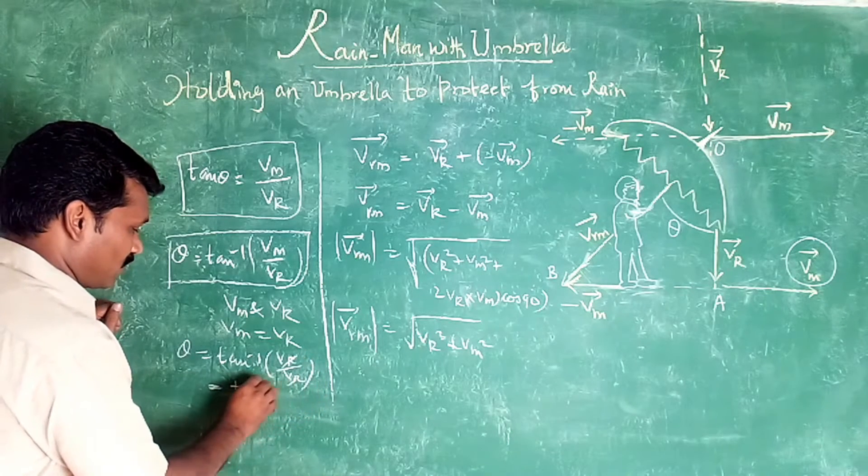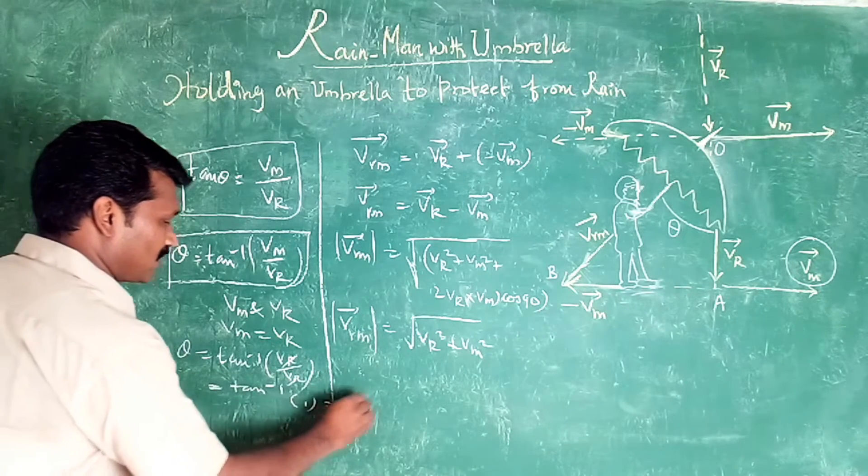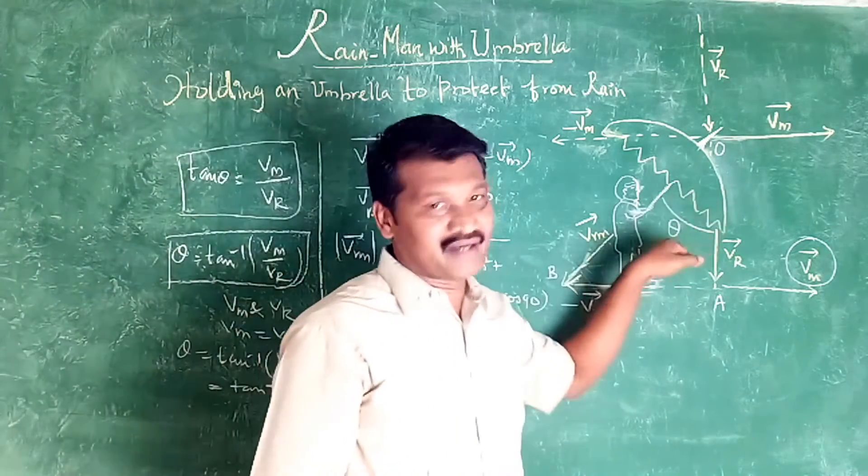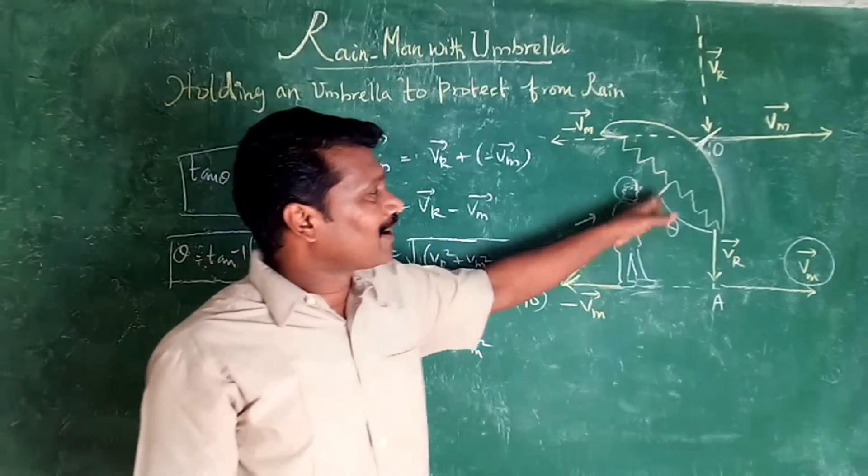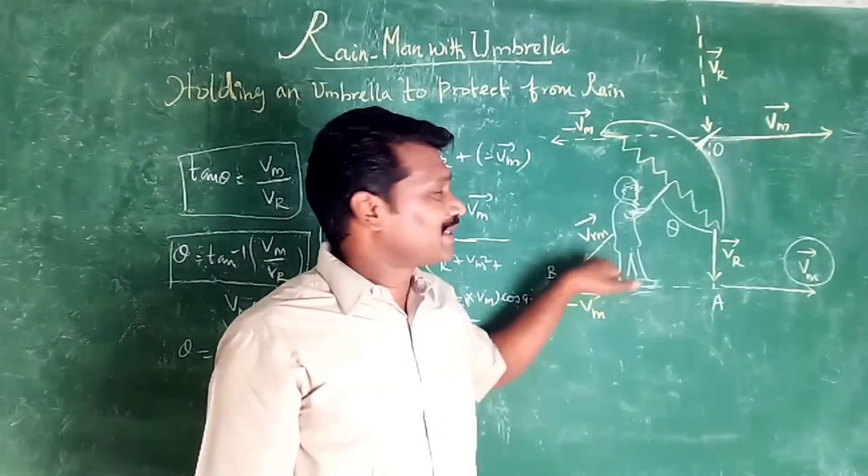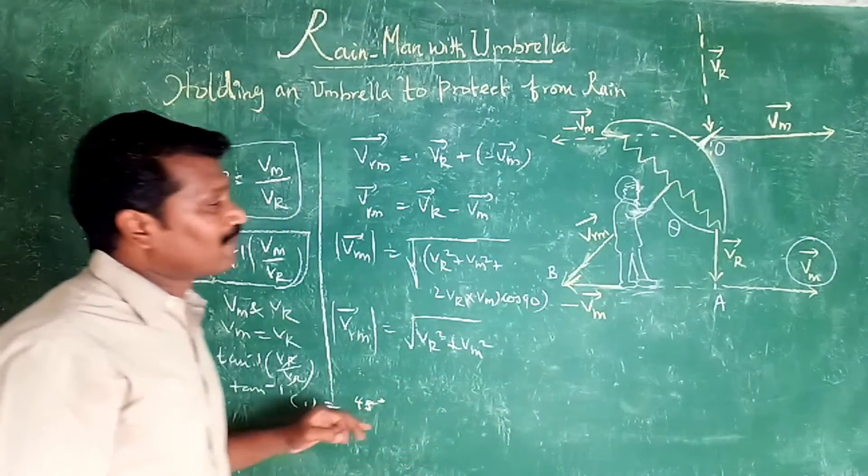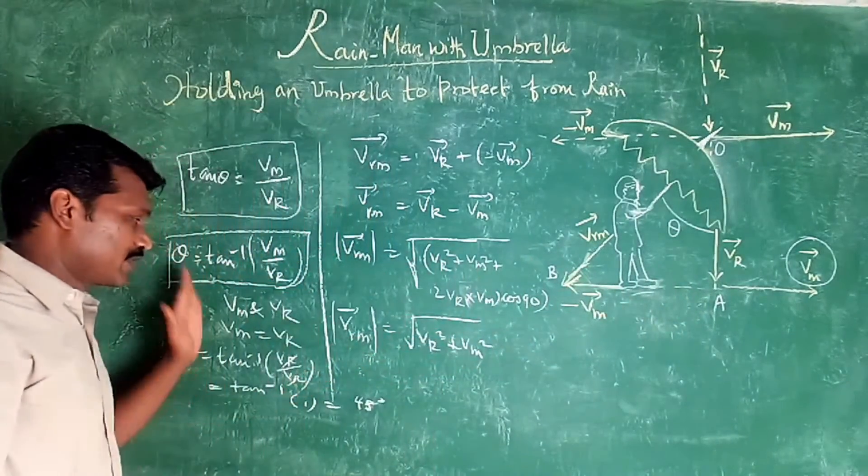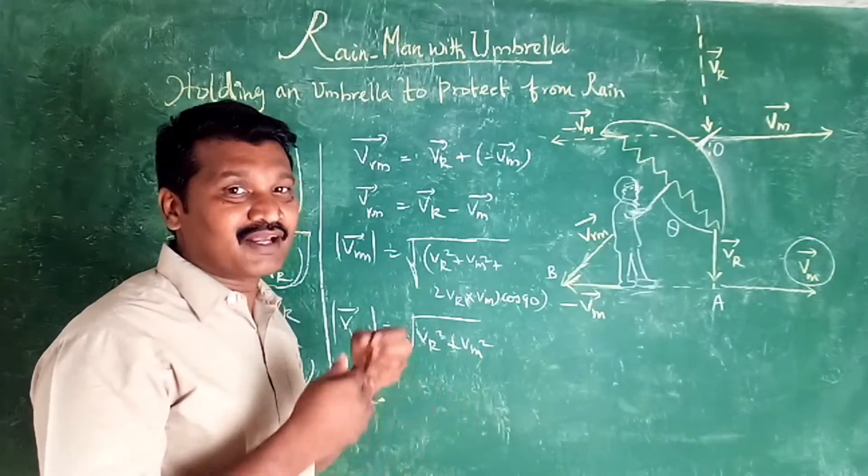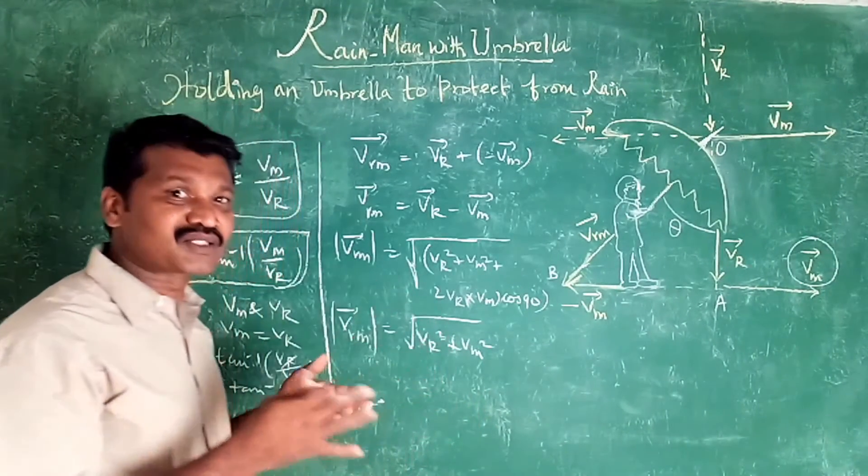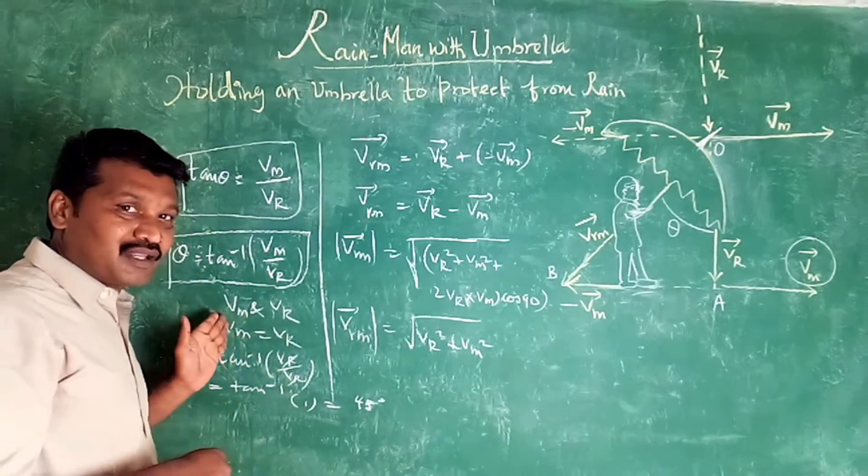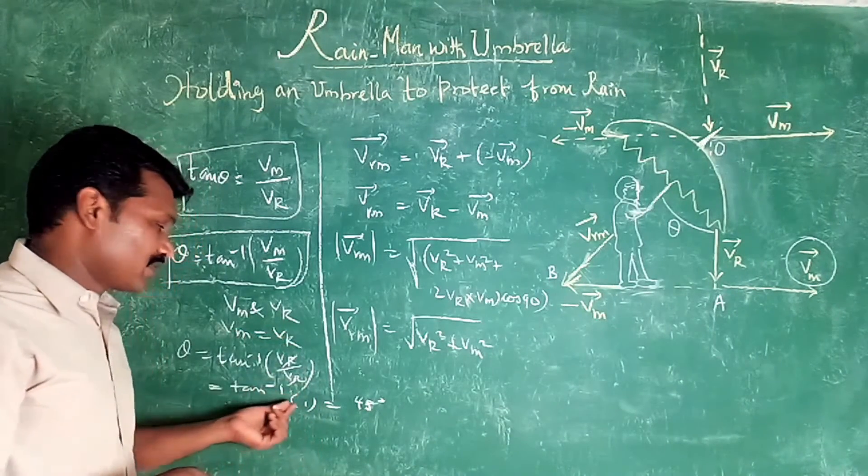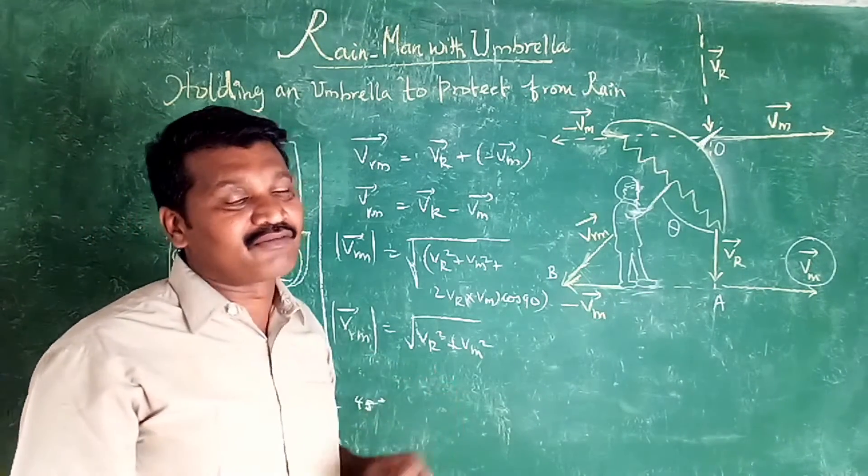So theta equal to tan inverse of Vm equal to Vr. So tan plus of 1, tan plus of 1 equal to pi by 4. Here this angle is equal to pi by 4. We are going to the related concept.